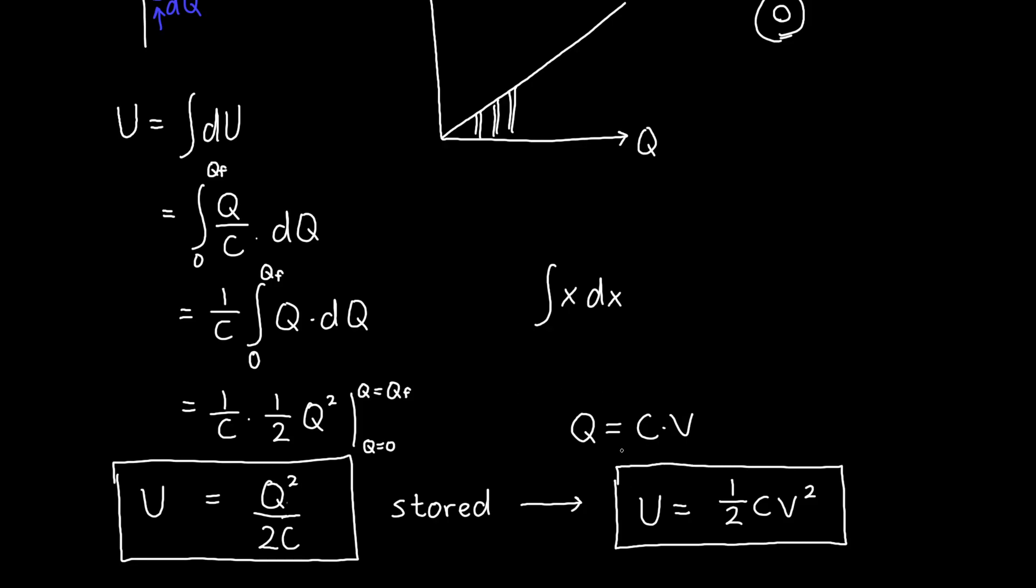So this I would say is the most common expression that's used for energy on a capacitor. If you wanted to, you could also cancel out the capacitance, and you could find that, so if we only plug in one Q here, we could see that U is equal to V times Q over 2. And that's also perfectly valid. You probably won't see this a whole lot. It usually won't be useful. This is typically the most useful expression for calculating energy stored on capacitors.